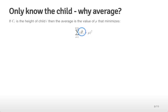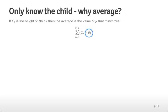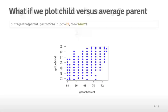One reason the average is a good number to report is that it minimizes the sum of squared errors. Suppose we have a child's height labeled ci, and we have 928 heights in this Galton dataset. We can look at the difference between ci and one summary number, square it so that negative and positive differences contribute equally, and sum across all observations. The average is the number that minimizes this quantity, giving it a nice theoretical justification as well as being sensible for describing the center of the distribution.